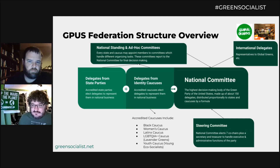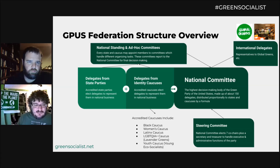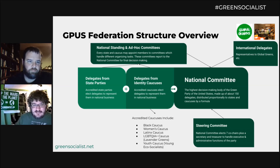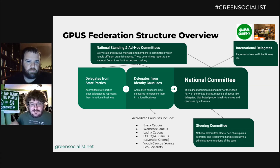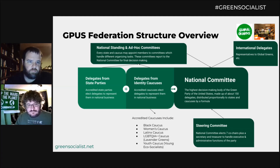That's the rough structure of the national party: we have the national committee, which is our Congress; the steering committee, which is kind of a cabinet; and then members get appointed to standing committees to do tasks like ballot access, media, or whatever. They get appointed to those committees from the states and caucuses. So if you wanted to be involved in national media, you could ask your state party to appoint you to the media committee and work with members from other states on national media.